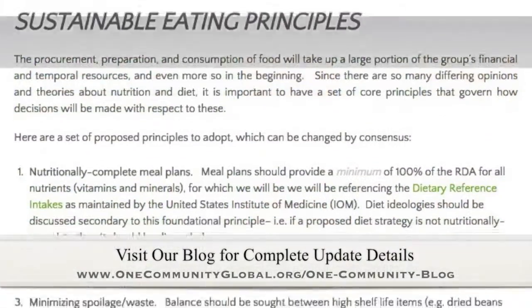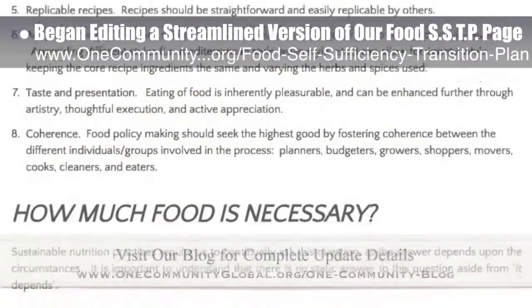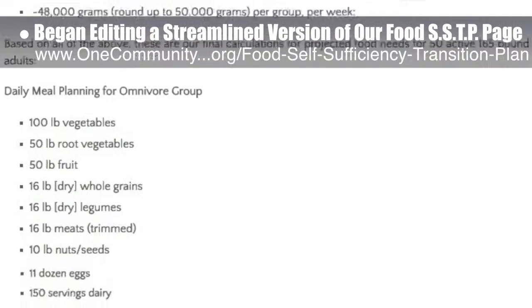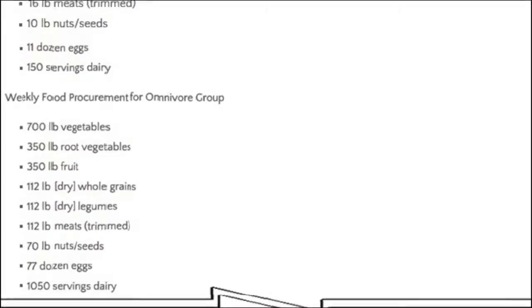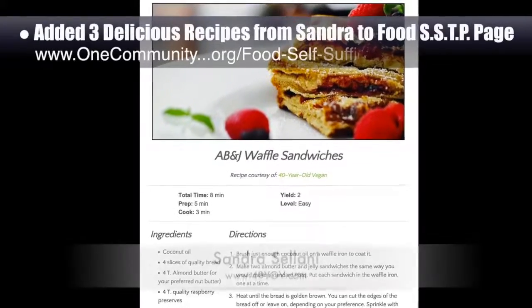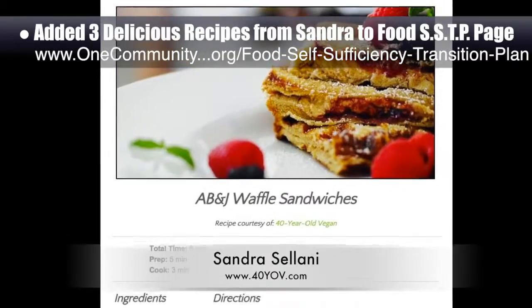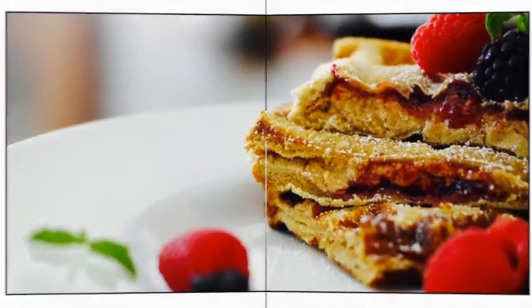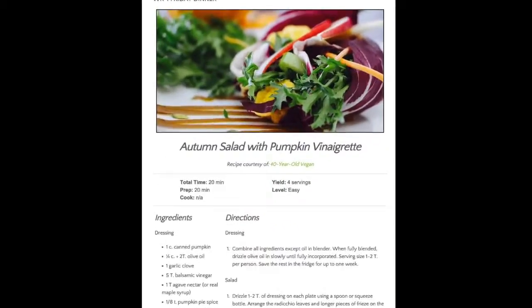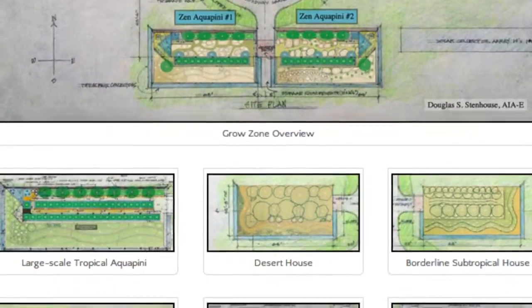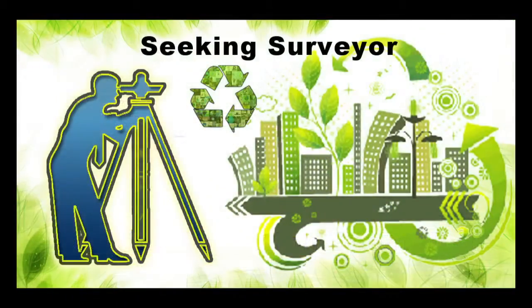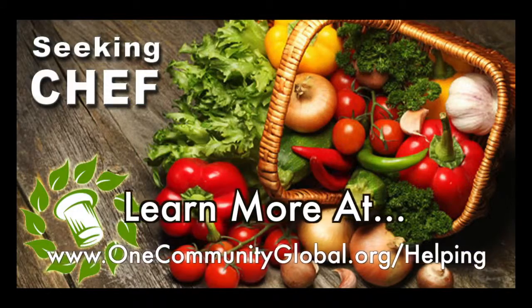This week the core team working on highest good food began organizing and editing a more streamlined version of our food self-sufficiency transition plan page — approximately 10% complete behind the scenes. We also added three additional recipes from Sandra Salani, vegan chef and author of "What's Your BQ": ABJ waffle sandwiches, pasta fagioli, and autumn salad with pumpkin vinaigrette. We are seeking permaculturalists, an irrigation specialist, a surveyor, and a chef to join our team.